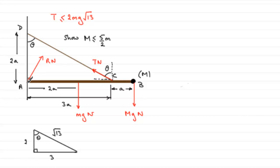And if we take moments about A, get an equation, we can rearrange it for the tension T, and then say that that tension T has to be less than or equal to this value here. And if we rearrange that inequality, we should find that we end up with M being less than or equal to 5/2m.